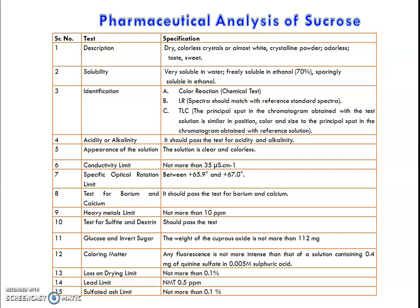Coming to the identification test — it has to pass three tests, mainly the color reaction, followed by the IR spectra of sucrose which should match with that of the standard spectra. In the TLC, the principal spot in the chromatogram obtained with the test solution should be similar in position, color, and size to the principal spot in the chromatogram obtained with the reference solution. It should thus pass the TLC with reference to the standard.